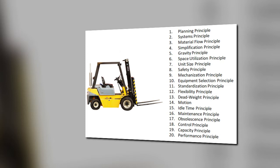Mechanization principle states we have to use mechanical or automated material handling equipment. Standardization principle emphasizes standardized methods, types, and sizes of material handling equipment. The flexibility principle states it should use methods and equipment that can perform a variety of tasks and applications. Equipment selection principle says to consider all aspects of material movement and methods to be utilized. Dead weight principle states to reduce the ratio of dead weight to payload in mobile equipment. The motion principle says equipment designed to transport material should be kept in motion.